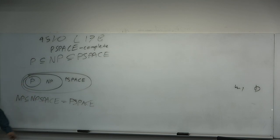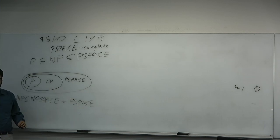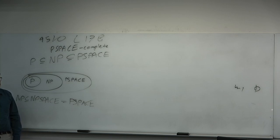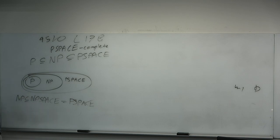Here's another proof: brute force search over the witnesses in polynomial space. Write one down, try it, ignore it, write another one, try it, ignore it. Not only can every verifiable problem be decided in exponential time with polynomial space — you can actually just do SAT directly.